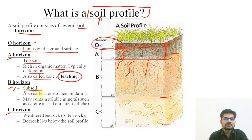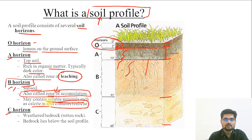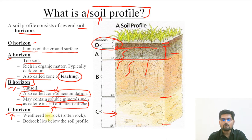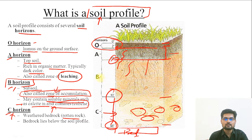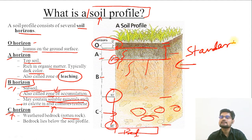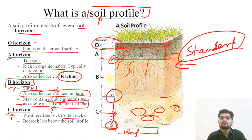B horizon is called subsoil and is also called the zone of accumulation. It may contain soluble minerals such as calcite in arid climate. The C horizon is largely the weathered bedrock material lying above the major bedrock. That is about 30 to 48 feet below the ground, while B is 10 to 30 feet and A is 2 to 10 feet. This is the standard profile, which is a generalization — soil profiles vary by location.